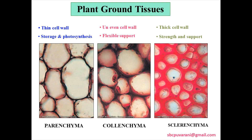Parenchyma is made up of thin cell walls and its main functions are photosynthesis and storage of starch. Collenchyma is made up of uneven cell walls and gives rigid support to the plant. Sclerenchyma is made up of thick cell walls and gives strength and support to the plant.